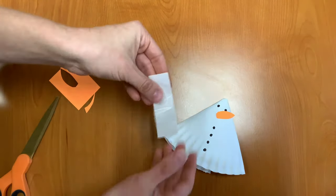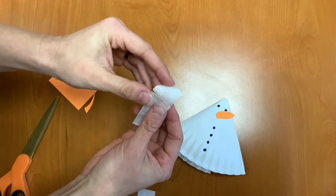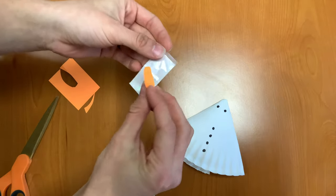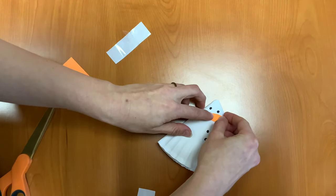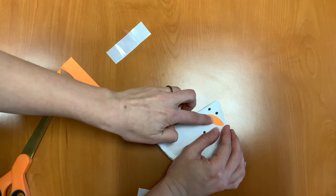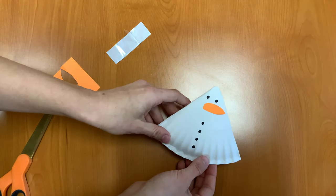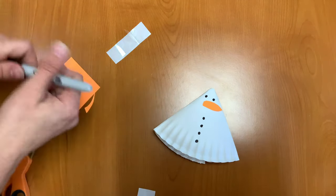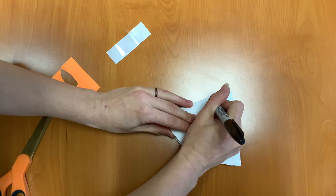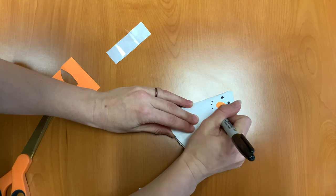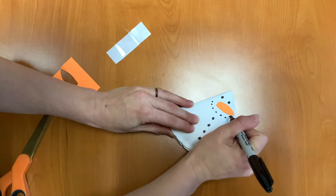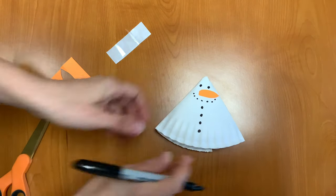Now I'm going to take another glue dot and glue my nose right on. Perfect! Next, we want to draw a mouth with our black marker. So just underneath the nose, we have our mouth.